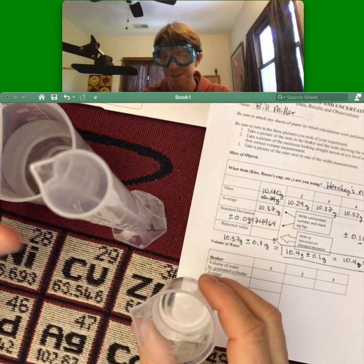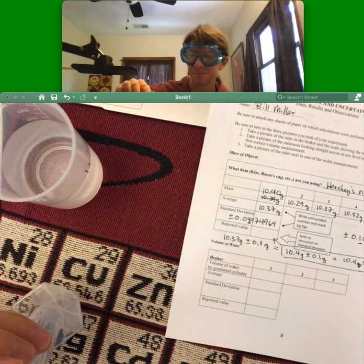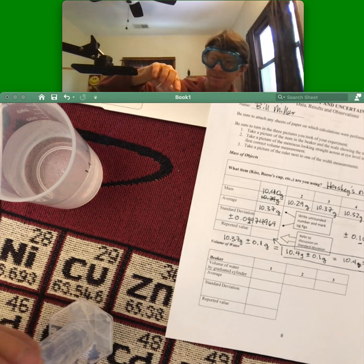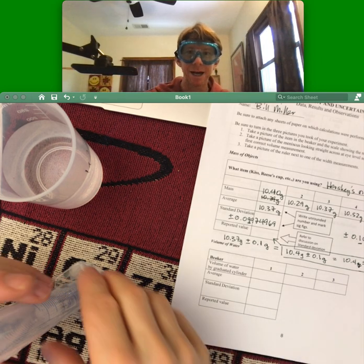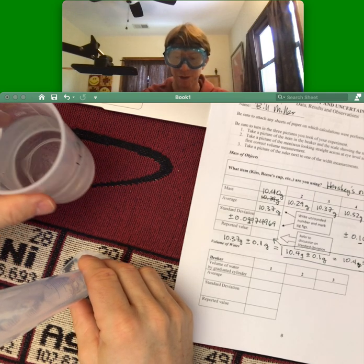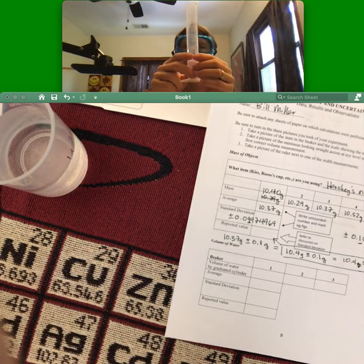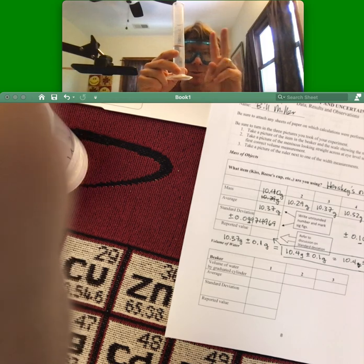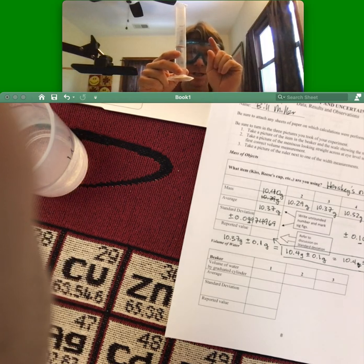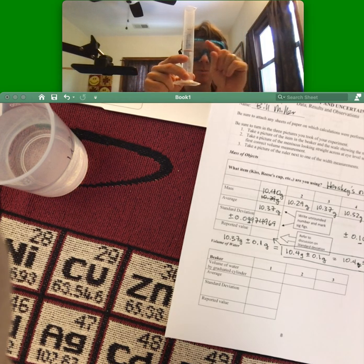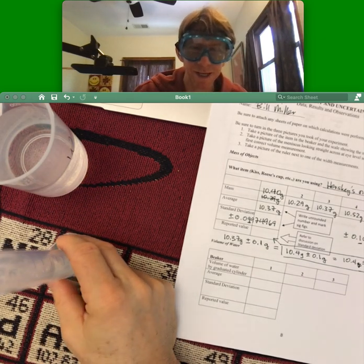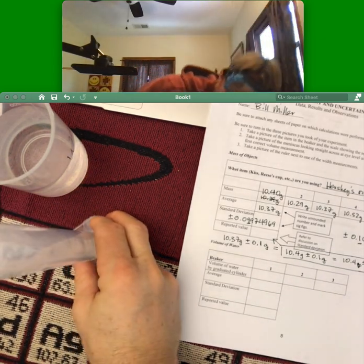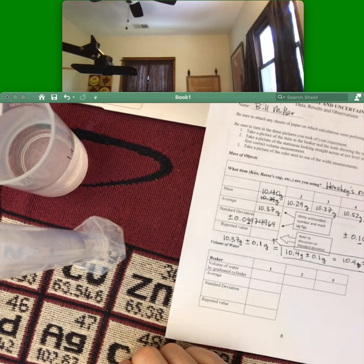And now I am going to pour it into here. And again, you have to look straight across if you are going to measure it. This one measures in one milliliter, so I am going to report my value to the 0.1 milliliters. And again, I apologize, I am going to disappear here for a minute. But I am going to get down. I am going to look straight across.